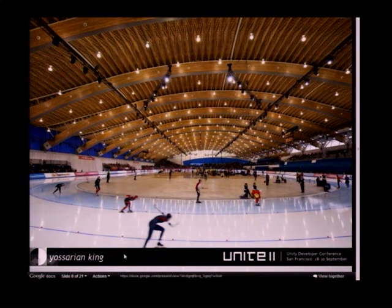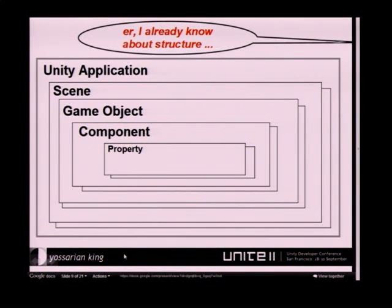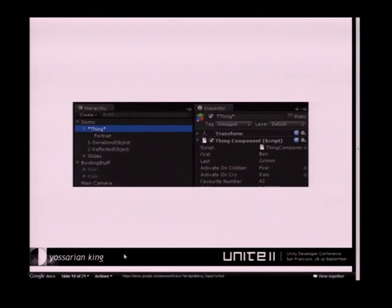Reflection is really about looking at the structure of a program. You can go through all the assemblies that are loaded. Each of those assemblies, you can look at the types. Each type, you can look at properties. Anything about that program is accessible through reflection. So in a Unity application, typically you've got one or more scenes, each scene has a bunch of game objects, each game object has a bunch of components, each component has a bunch of properties, and you can see those in the editor.